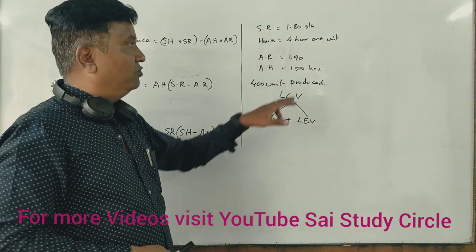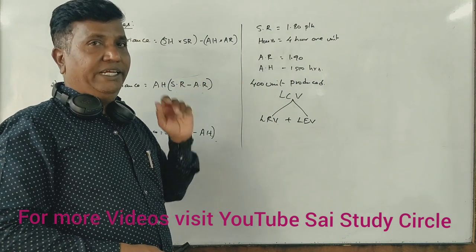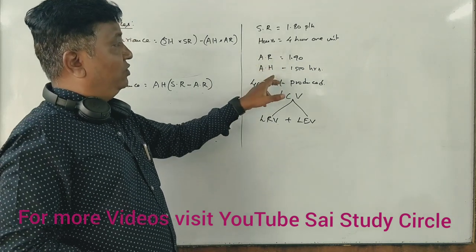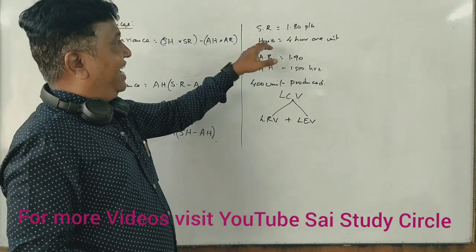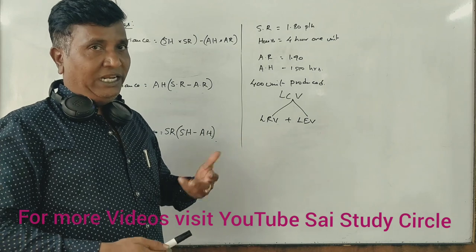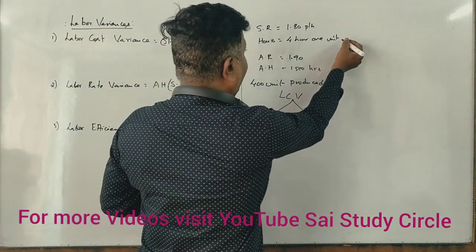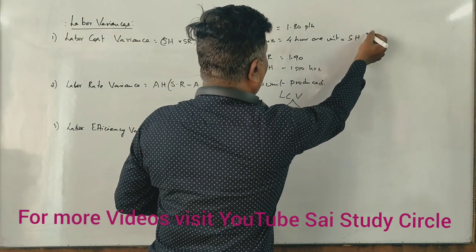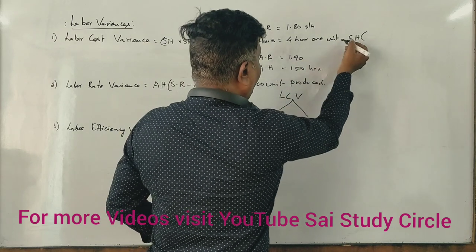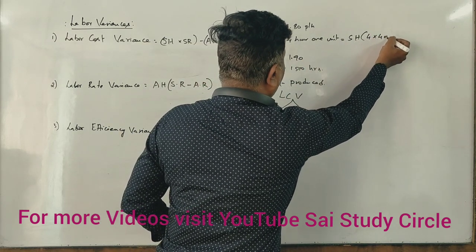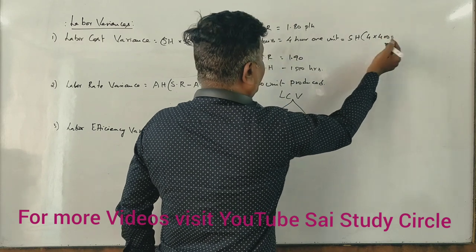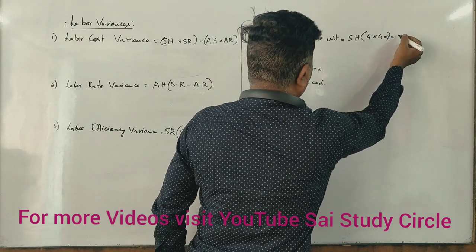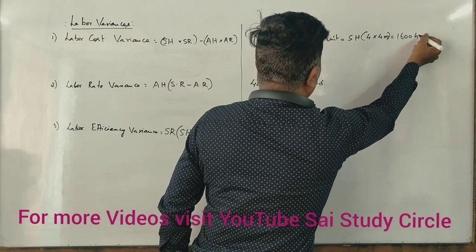So if you have 1,500 actual hours, you can calculate standard hours. Now, for standard hours, 4 hours per unit times 400 units produced gives you 1,600 hours.